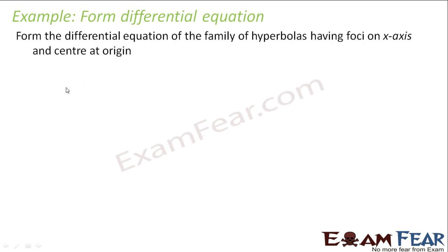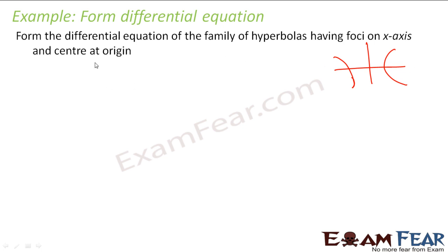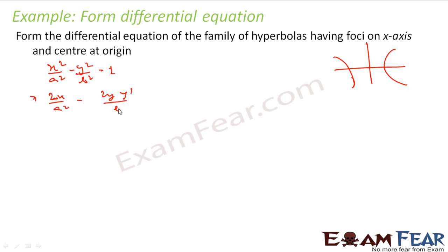Next example: find the family of hyperbolas having foci on the x-axis and center at the origin. That means we look for hyperbolas of the form x²/a² − y²/b² = 1, where foci are on the x-axis and center is at the origin. There are two variables, so we differentiate twice. First differentiation gives 2x/a² − (2y·y')/b² = 0.